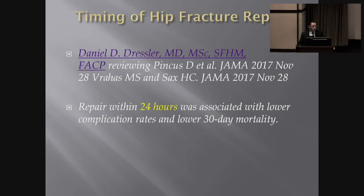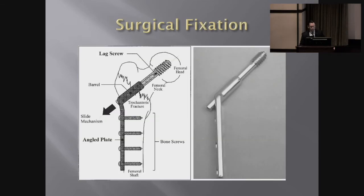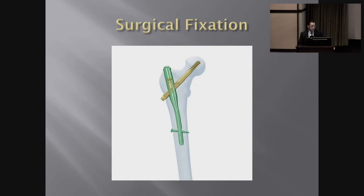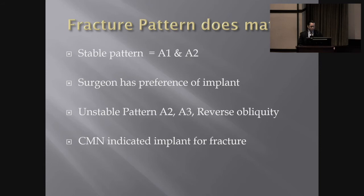For surgical fixation, here's an example of something that's been around a long time — it's called a sliding hip screw. It's a side plate with a screw that goes into the femoral head. This is what we call load-bearing because the metal will actually bear most of the weight as the fracture heals. Here's a more modern technique — it's a nail called cephalomedullary nail fixation, meaning there's fixation into the head of the femur and then down the intramedullary canal.